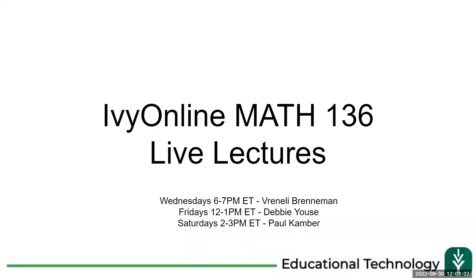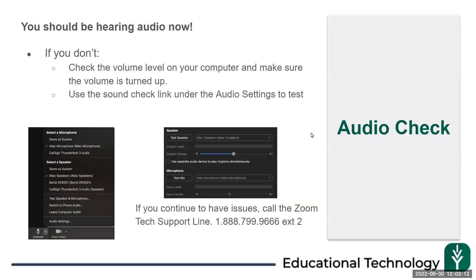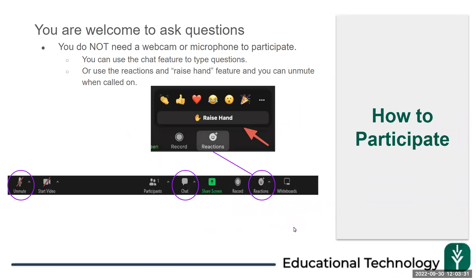Welcome to the Math 136 lectures for week six. You should be hearing audio right now. If you're not, you can check your volume control in your audio settings and use the Zoom tech support line at 1-888-799-9666 extension 2 if you need further assistance. You can use Zoom reactions to raise your hand electronically and unmute to ask a question, or use the chat feature.